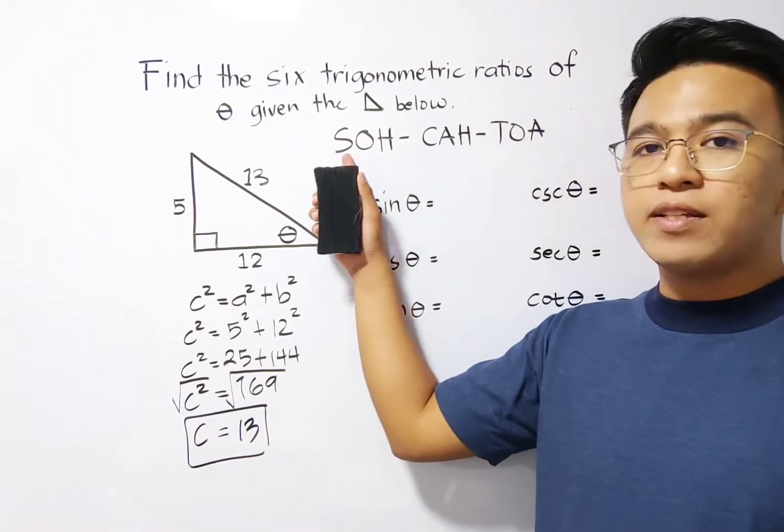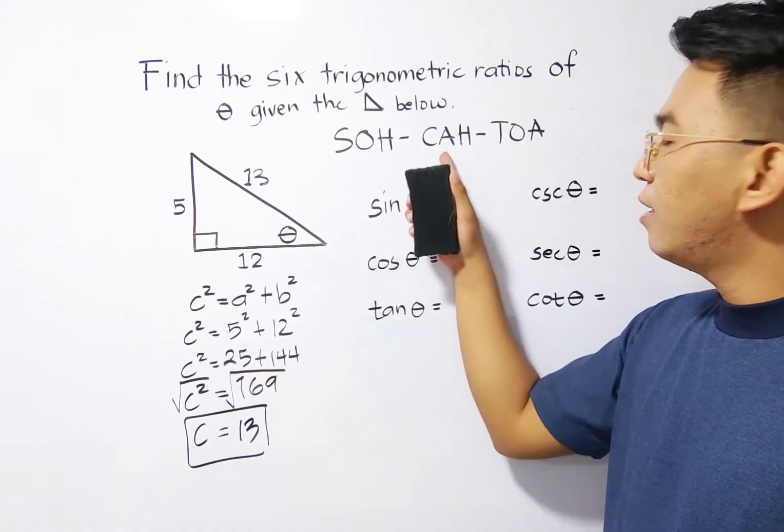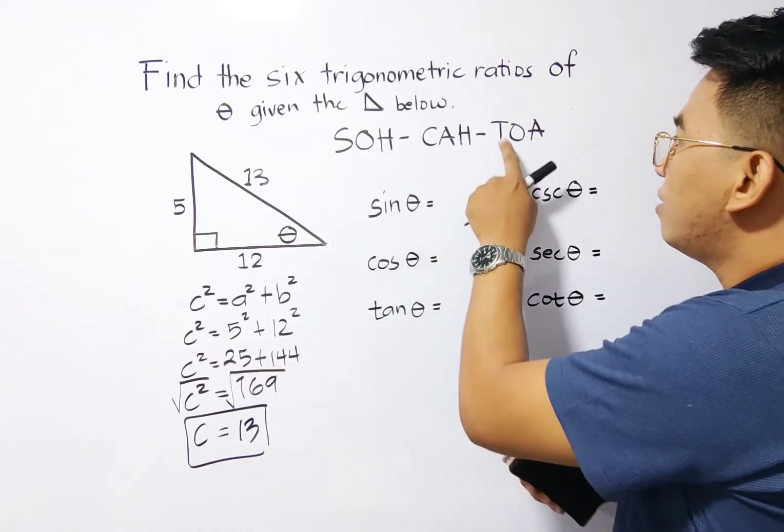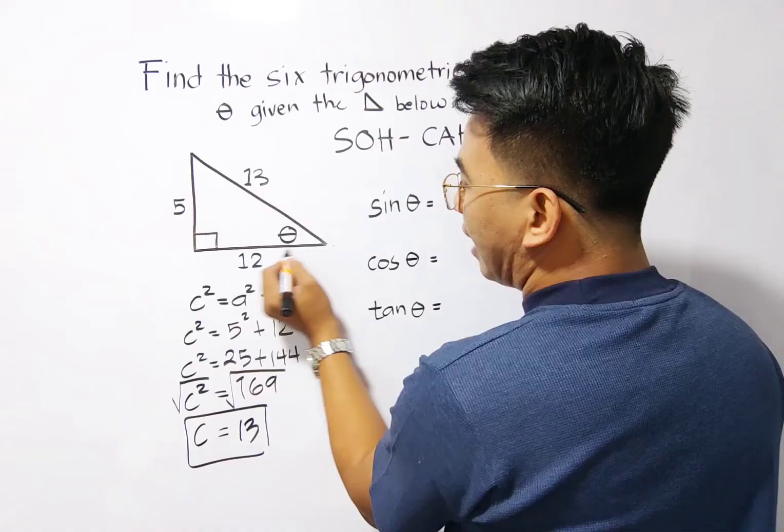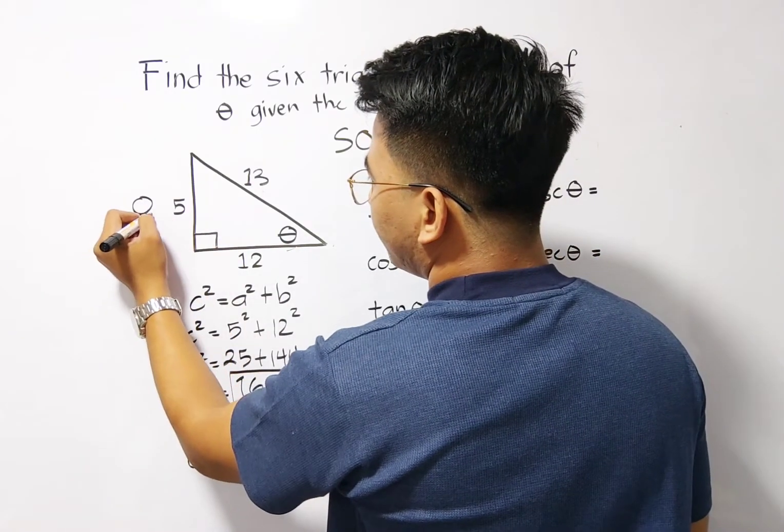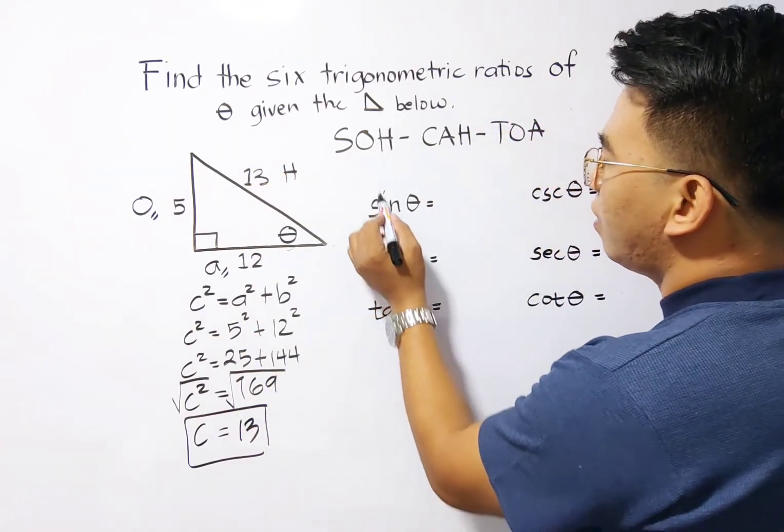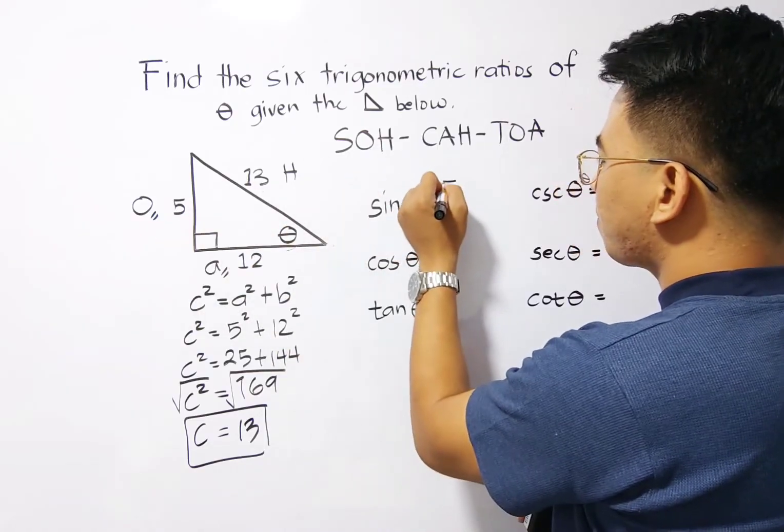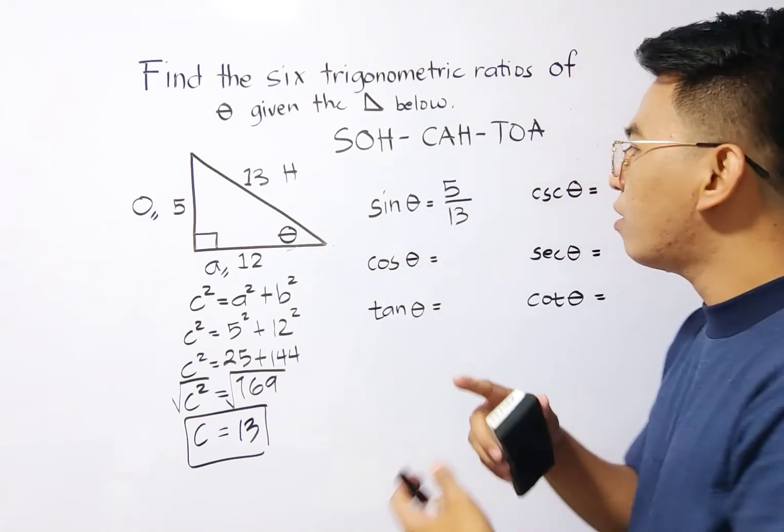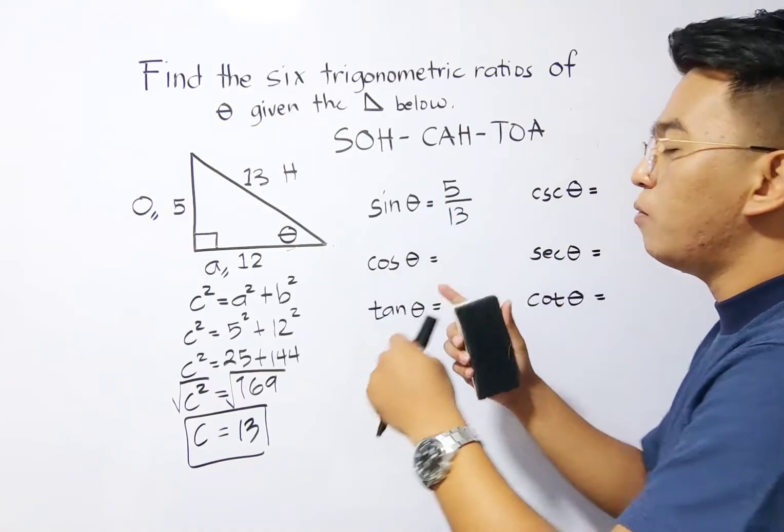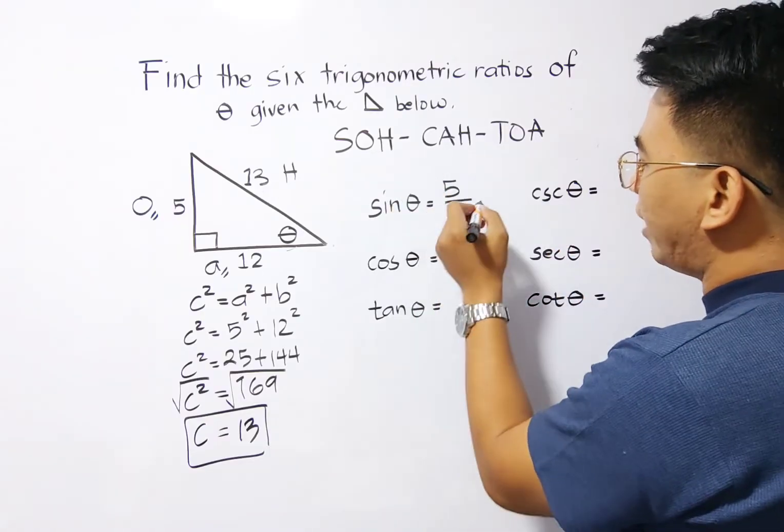We have here sine is equal to opposite over the hypotenuse, and cosine is equal to adjacent over the hypotenuse, tangent is equal to opposite over the adjacent. This is your opposite with respect to your angle theta. This is your opposite side. This is your adjacent side. And this is your hypotenuse. So for sine, we have opposite, which is 5, over the hypotenuse, which is 13. And this is it. But always remember, since this one is a ratio or in fractional form, you need to express that always in lowest terms. So this one is already in lowest terms.